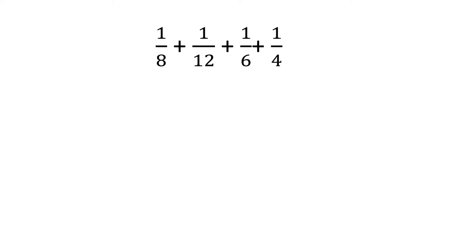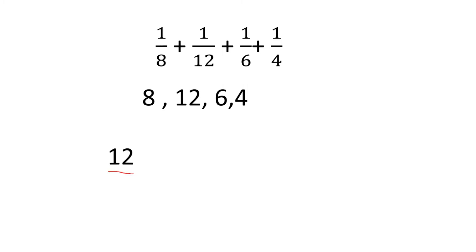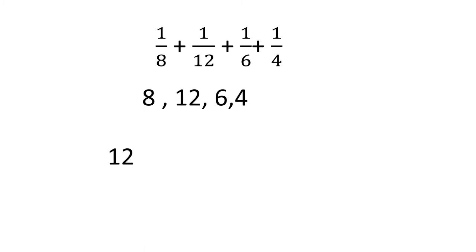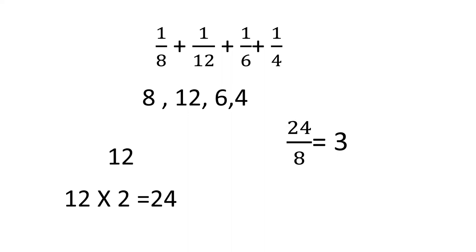Let us look at another type: 8, 12, 6, and 4. The highest number is 12. We check whether 12 is divisible by the other numbers. 12 ÷ 6 — yes. But 12 is not divisible by 8. So we multiply by the next smallest number, 2: 12 × 2 = 24. Now check: 24 ÷ 8 = 3, 24 ÷ 6 = 4, 24 ÷ 4 = 6. So 24 is the LCM.